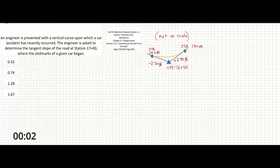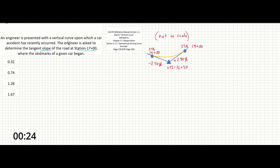In this problem, an engineer is presented with a vertical curve upon which a car accident has recently occurred. The engineer is asked to determine the tangent slope of the road at station 17 plus 00, where the skid marks of a given car began. We are being asked to find a slope at a station in a vertical curve. Typing 'vertical curve' into our reference manual takes us to chapter five, Transportation, specifically section 5.3.1, Symmetrical Vertical Curve Formula. We'll use the equations there to solve this problem.